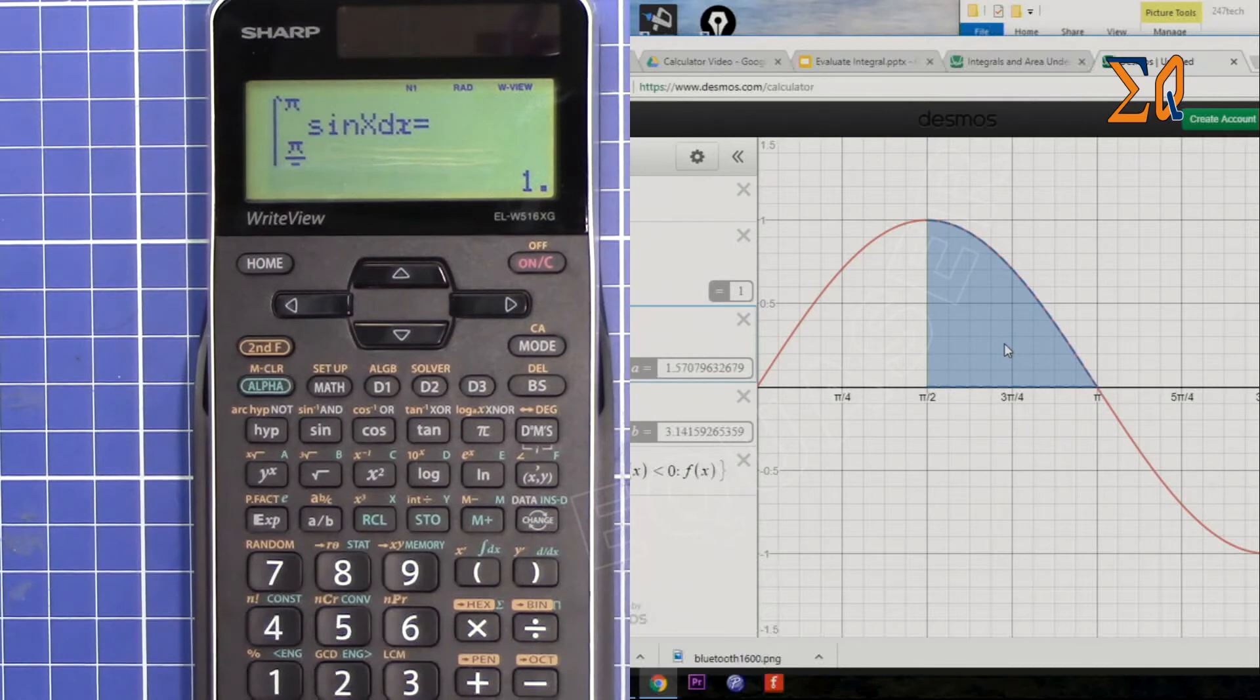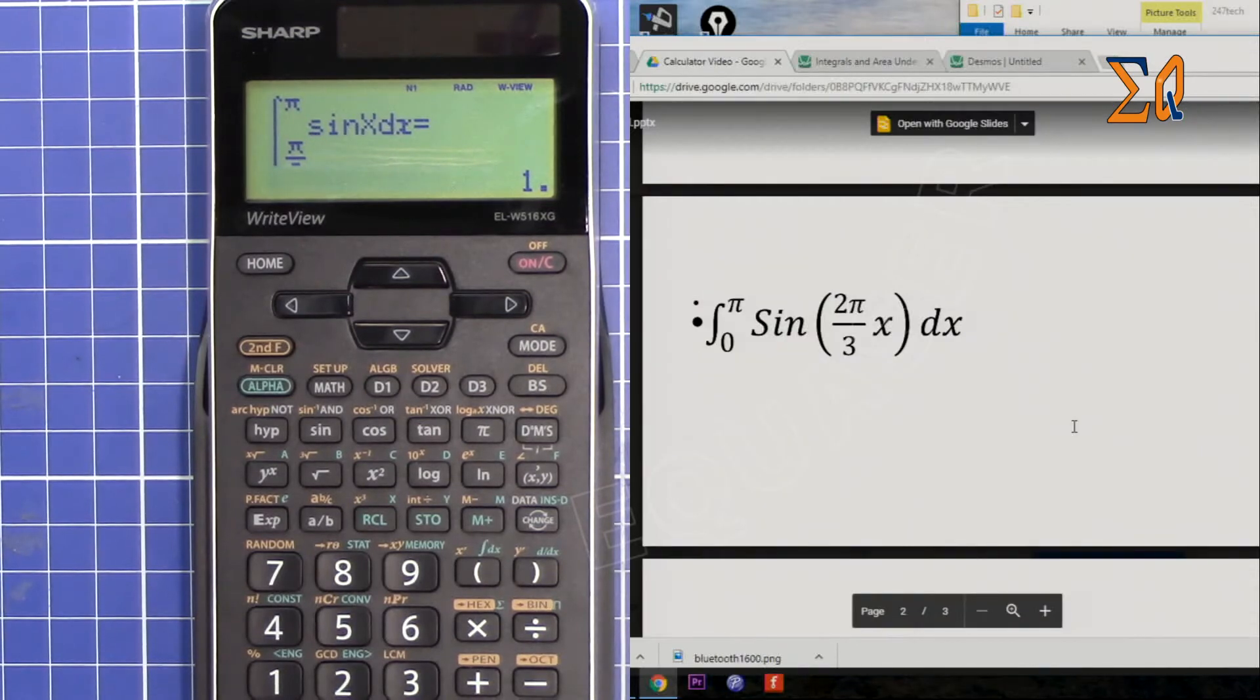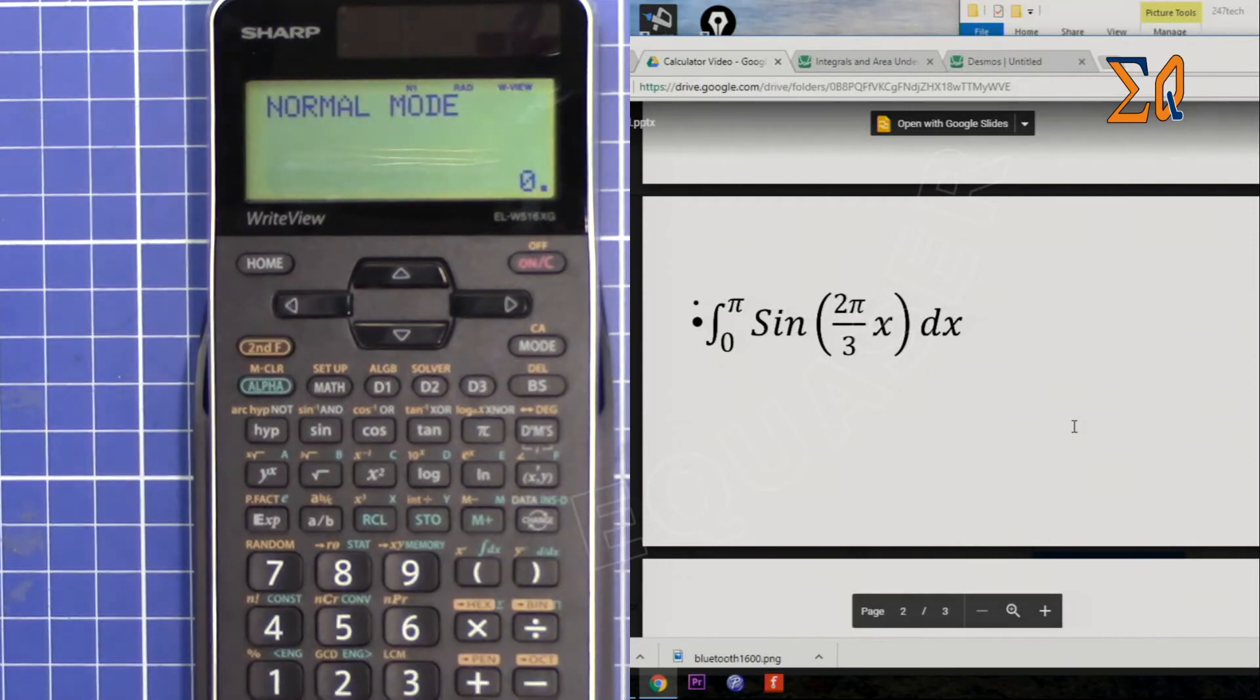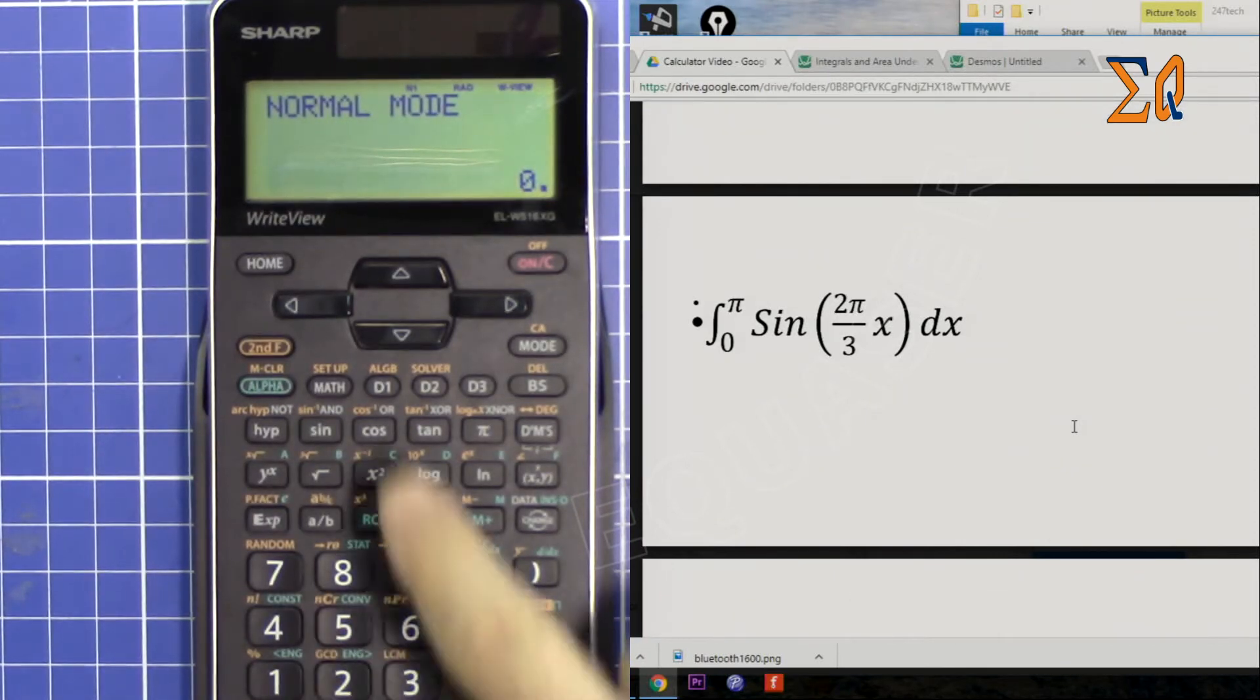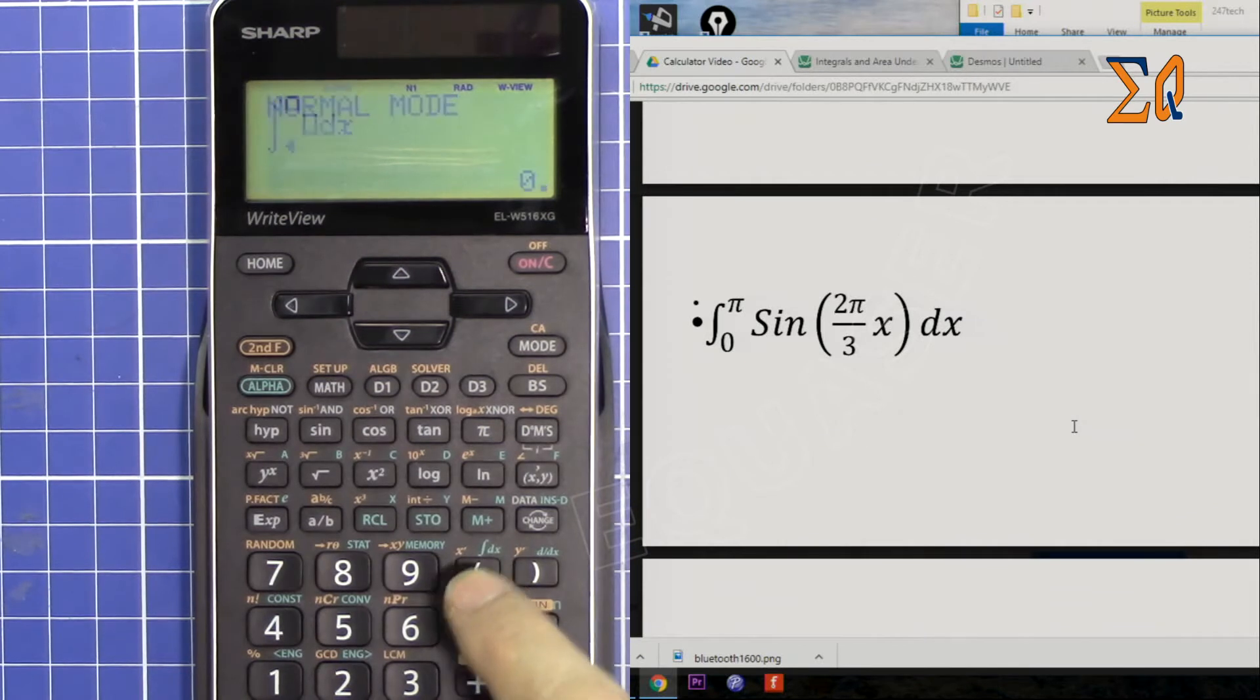You see here it says 'busy.' It will do the evaluation and then give you the result. That area under the curve is one. Now let's do something fancier. I'm pressing Home to get rid of that.